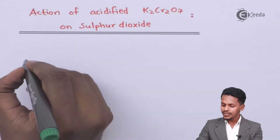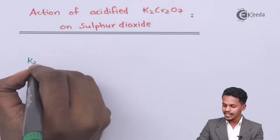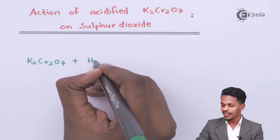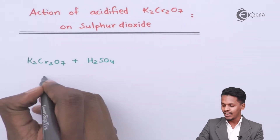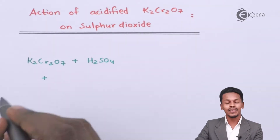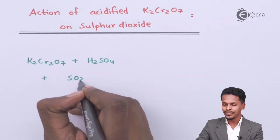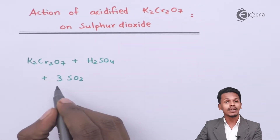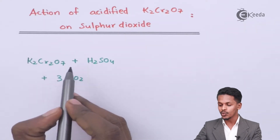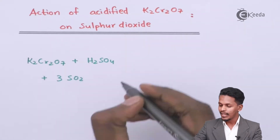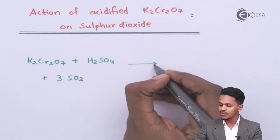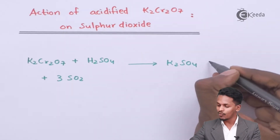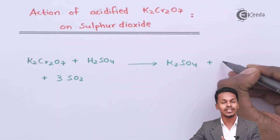Whenever K2Cr2O7 in an acidic condition — that is in the presence of H2SO4 — is reacted with sulfur dioxide (SO2), I am balancing the reaction by reacting 3 moles of SO2 with K2Cr2O7 and H2SO4. The product we get is K2SO4 (potassium sulfate) along with a byproduct.